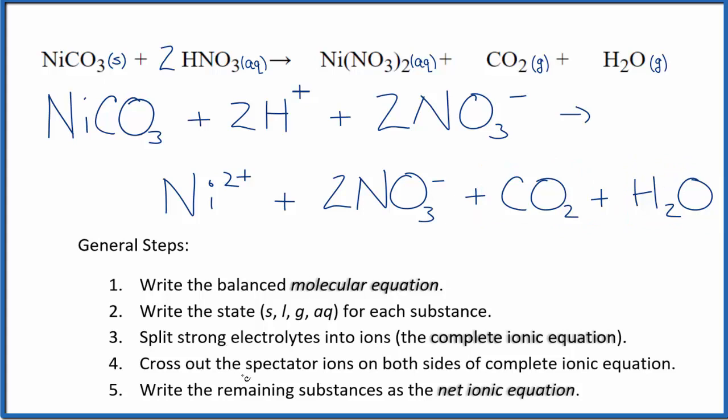So now we can cross out the spectator ions. They're on both sides. The only thing that's in the reactants and the products that's the same are these two nitrate ions. We have them here in the reactants and here again in the products. Those are spectator ions. We'll cross those out and that gives us the net ionic equation for NiCO3 plus HNO3.